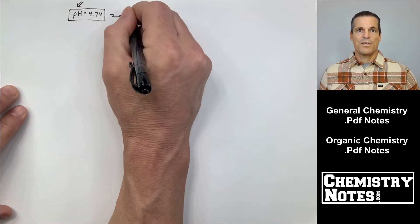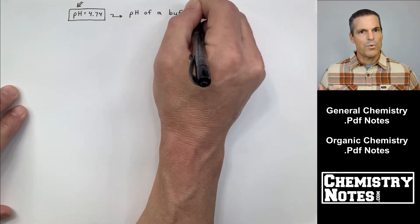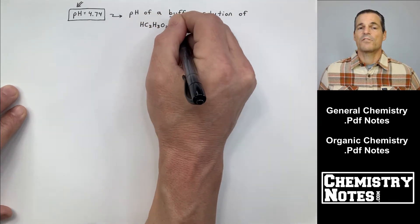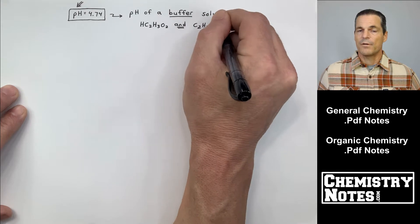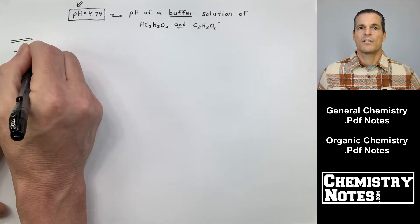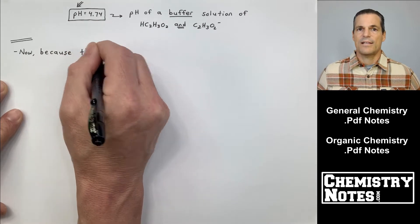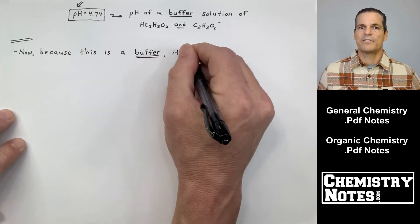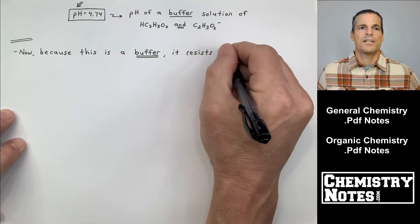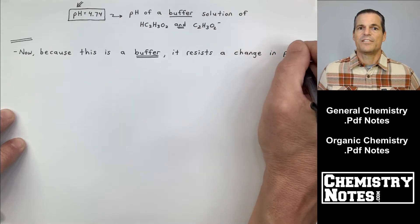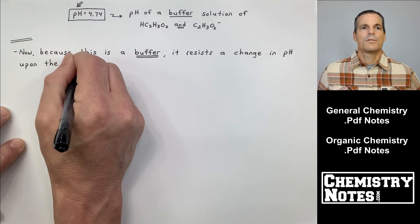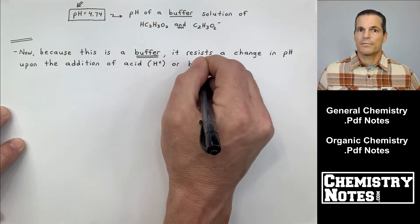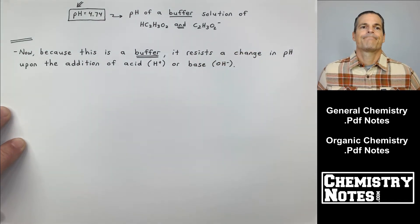I'm going to introduce a strong base to this. I want to see what happens and then what the final outcome is. So it says pH is 4.74, pH of a buffer, which is a buffer solution in this particular case, of acetic acid and acetate. Double lines. I'm getting ready to add OH- now. I need to set it up for you in our notes. It says, now, because this is a buffer, it resists a change in pH upon the addition of acid, H+, or base, OH-.